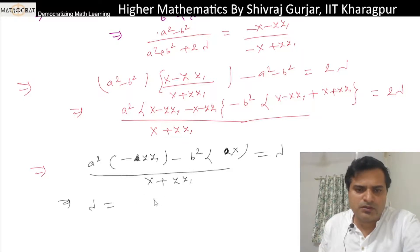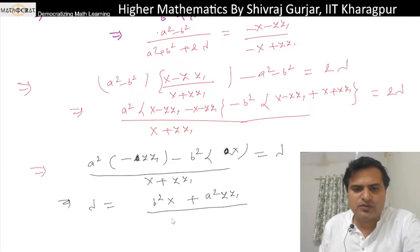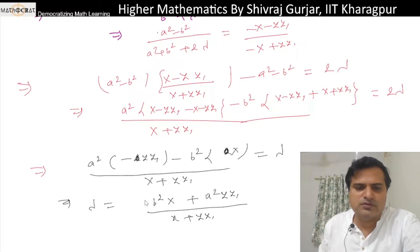So lambda equals (a²·x + a²·y·y₁) divided by (x + y·y₁).